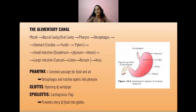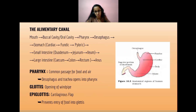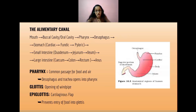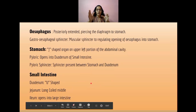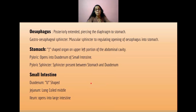The large intestine contains three parts: the cecum, colon, and rectum, leading to the anus. The pharynx is the common passage for food and air. The glottis is the opening of the windpipe, and the epiglottis is the cartilaginous flap that prevents the entry of food into the glottis.